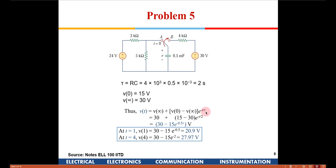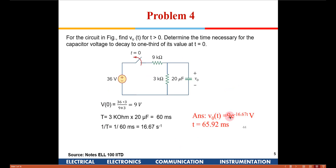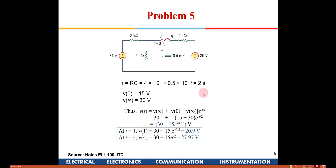Previously we took the special case where V(∞) equals 0, so the expression reduced to V₀ e^(−t/τ), which is the decaying equation we saw earlier. That was only a special case where the capacitor discharged to 0 with no voltage source present. Using the generalized expression with V(∞) = 30, V₀ = 15, and τ = 2 seconds, we substitute t = 1 and t = 4 into the equation to find the corresponding voltages.